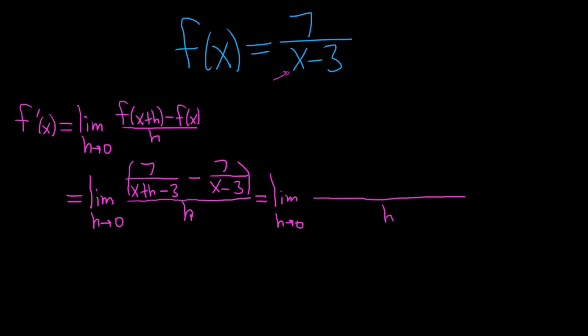And so the way I subtract these is the following. I know that the bottom is just going to be this times this. So I go ahead and write it, the product of those. So x plus h minus 3, then it's x minus 3. This is the fastest way to do it.